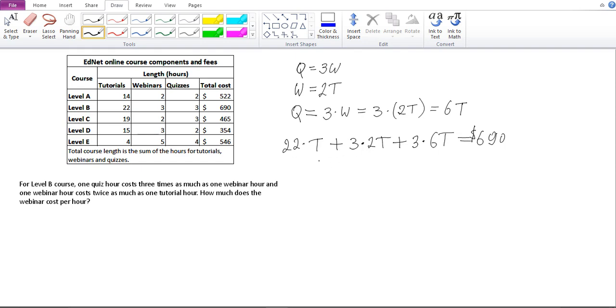When I add them up, it's going to be 22T plus 6T plus 18T equals 690. 22 plus 6 is 28, 28 plus 18 is 46, so 46T equals 690. T equals 15, so 15 times 46 is going to be 690.